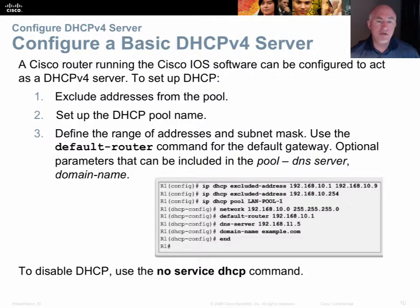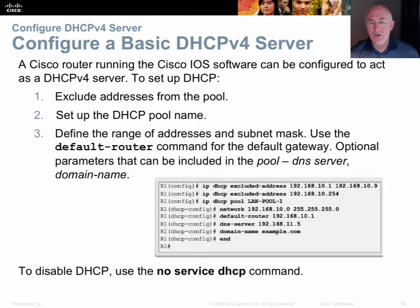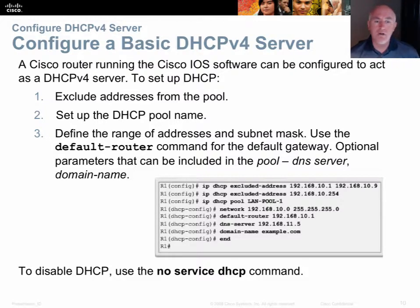If you want to turn off DHCP, just type 'no service dhcp' and it disables the DHCP process — the settings stay in the config. This is useful for troubleshooting competing DHCP servers, for example. When you want to reactivate it, just type 'service dhcp.'